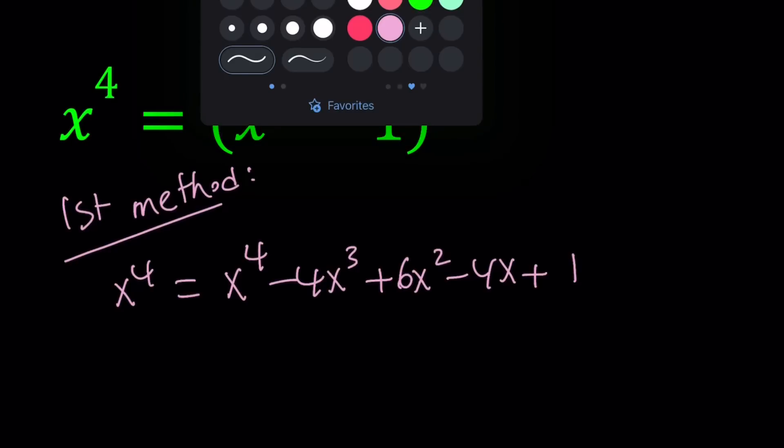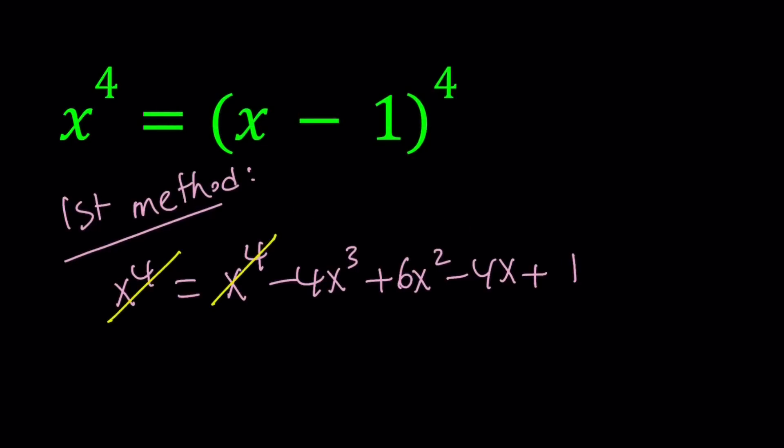So let's go ahead and do that. x to the fourth cancels out. Let's put everything on the left hand side so everything is positive. 4x³ - 6x² + 4x - 1 = 0.